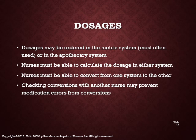Dosages may be ordered in the metric system, most often used, or in the apothecary system. Nurses must be able to calculate the dosage in either system and convert from one system to the other. Checking conversions with another nurse may prevent medication errors. Anytime you have any doubt, you should always consult your pharmacist — call your pharmacy, speak to a pharmacy tech, or have a pharmacist put on the line for you. Make sure you know how to use your resources.